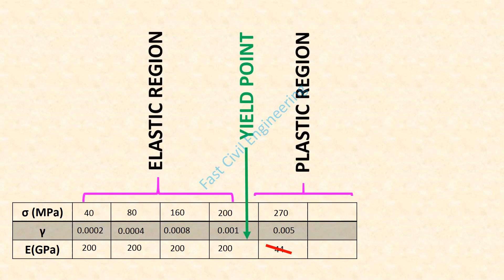There is the elastic region and the plastic region. The point in between the elastic and plastic region is called the yield point.